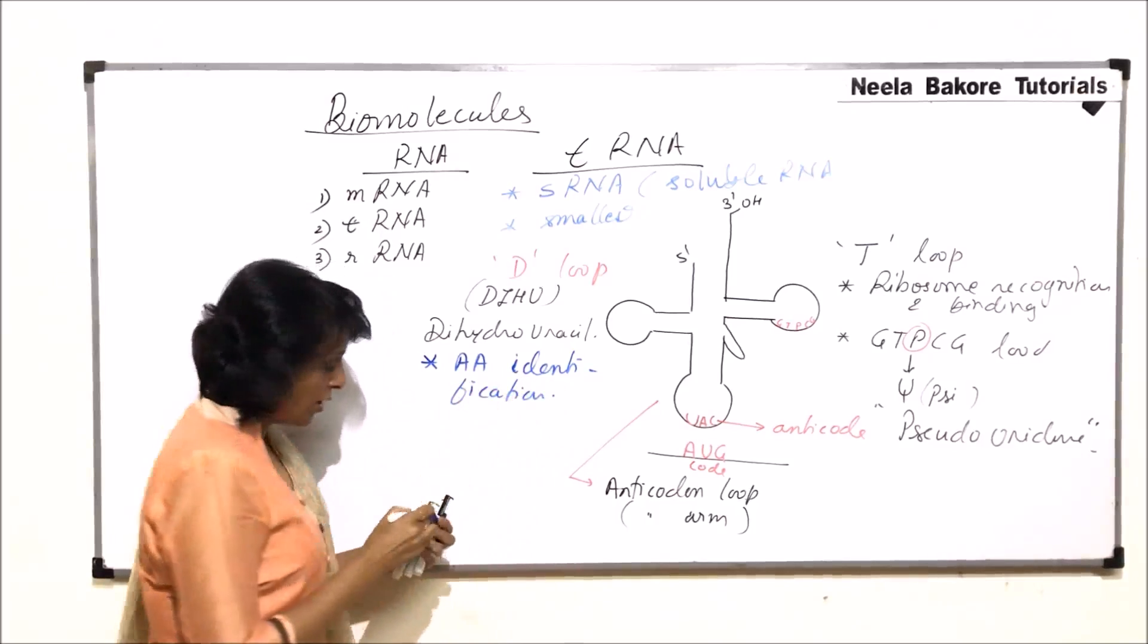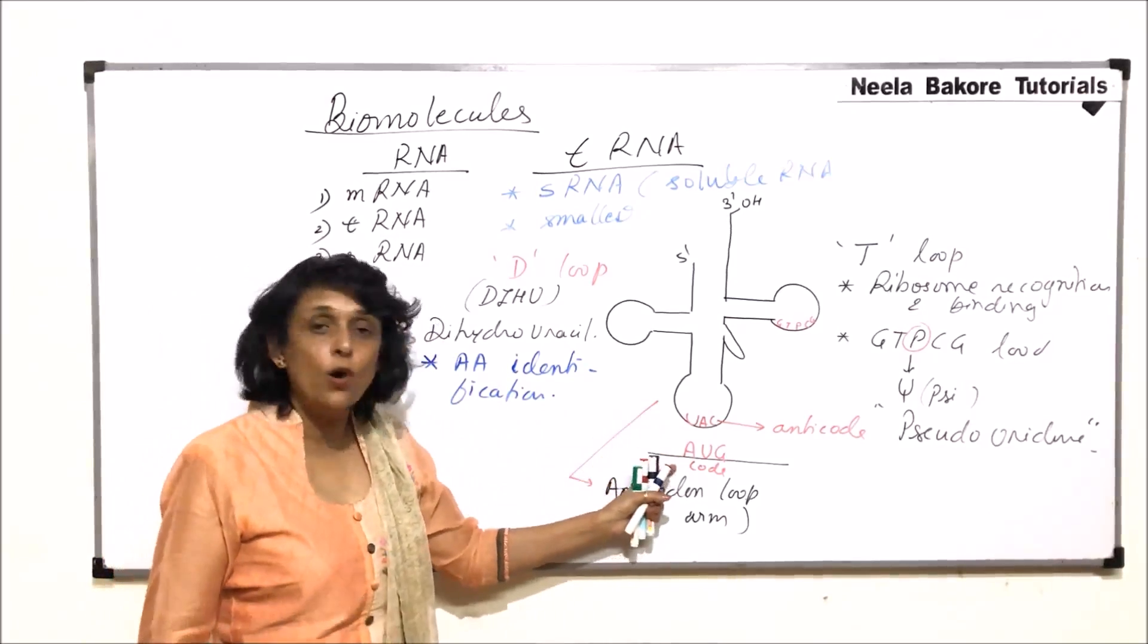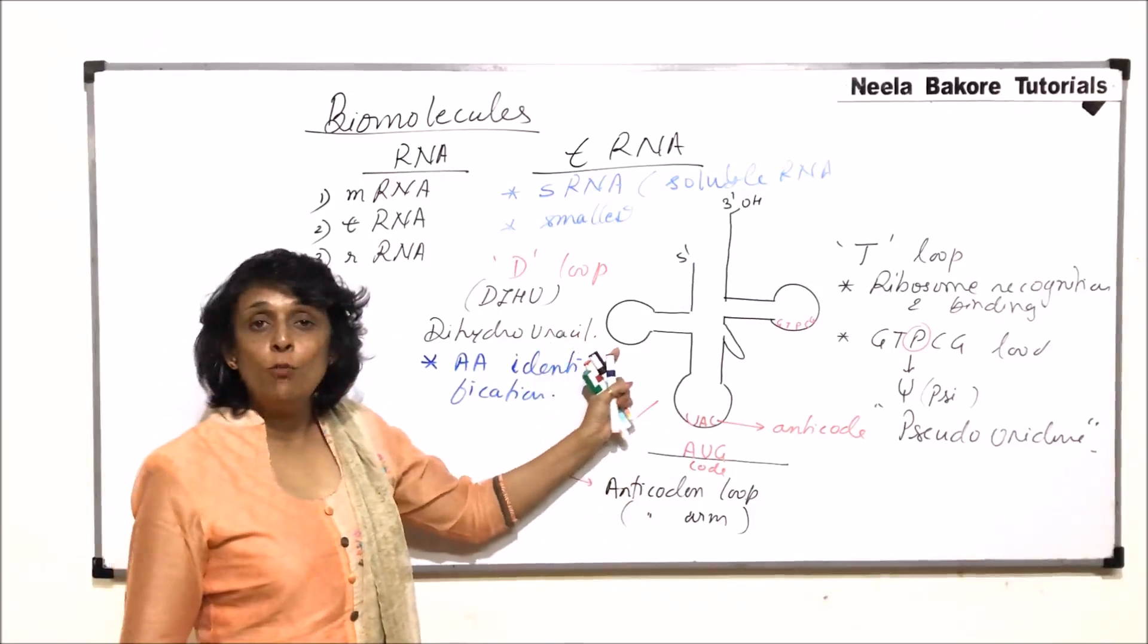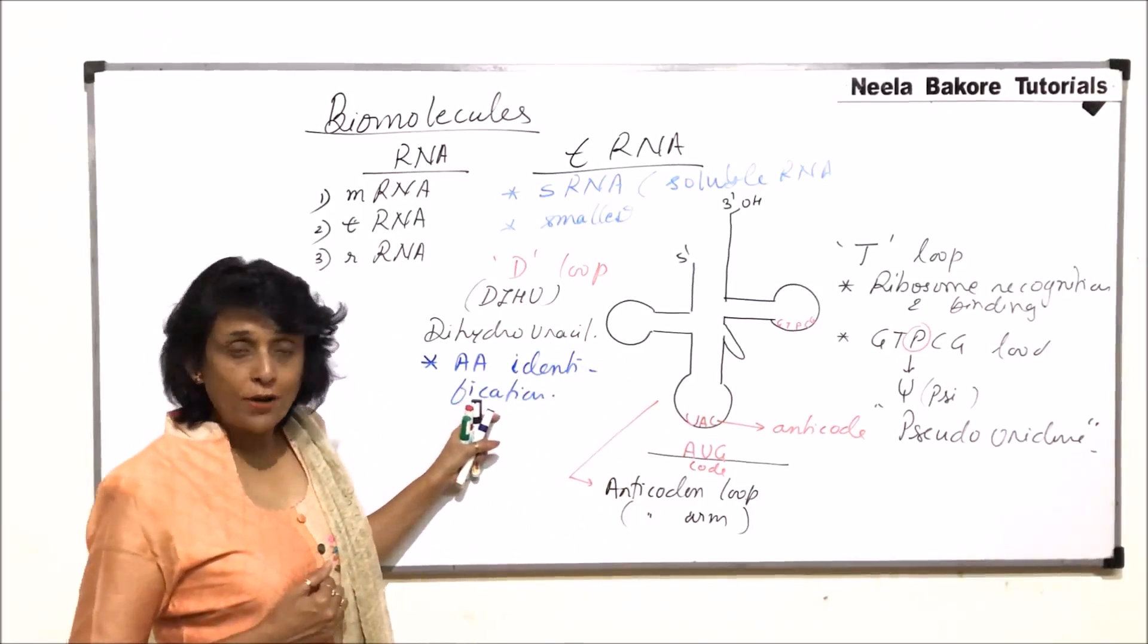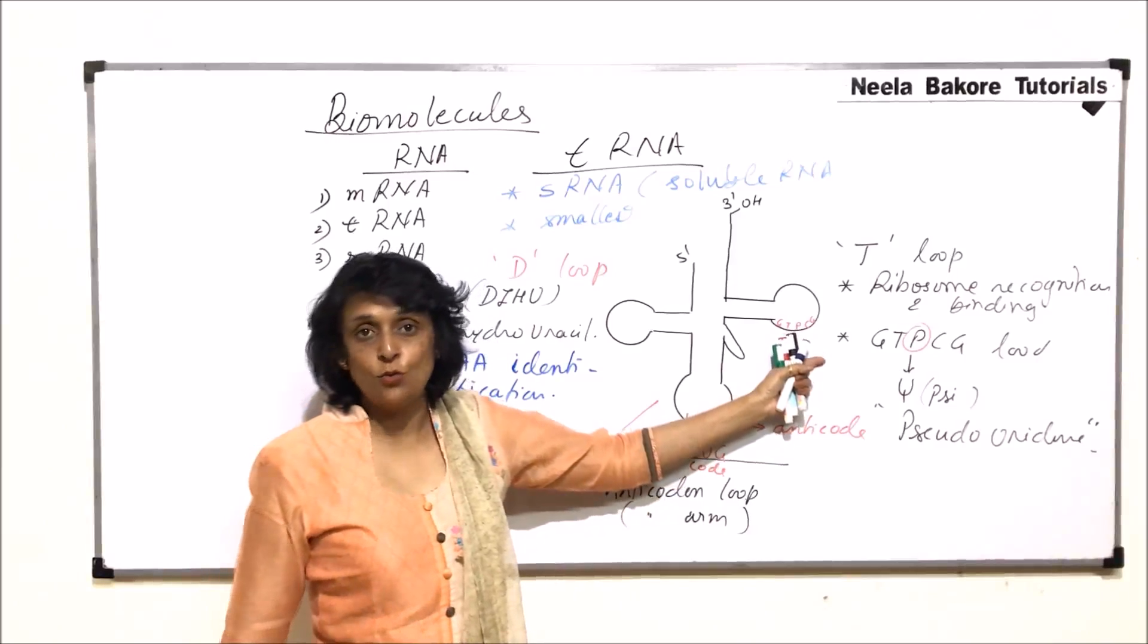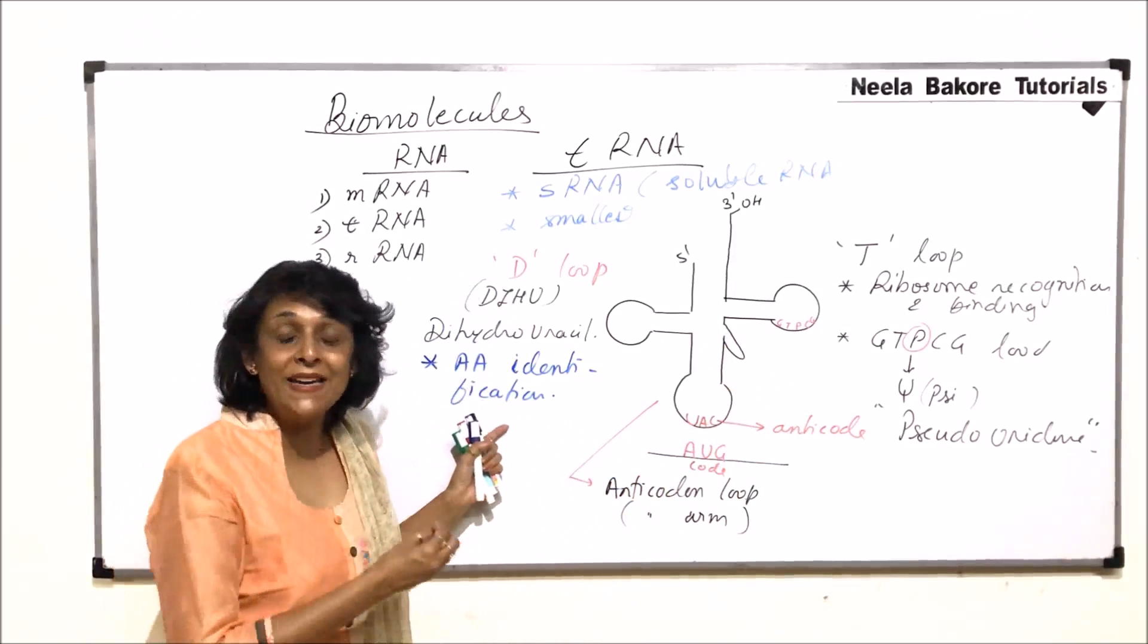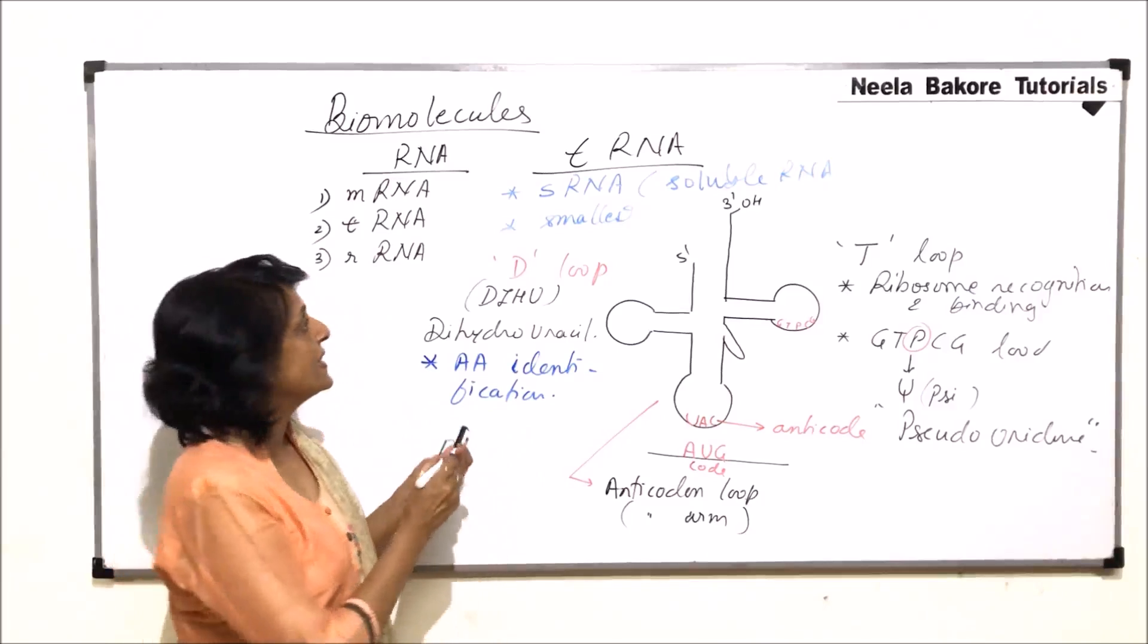So now what has happened is this anticodon loop reads the code from mRNA. This loop D-loop identifies which amino acid is to be brought here. T-loop is going to recognize which ribosome it has to go and attached to.